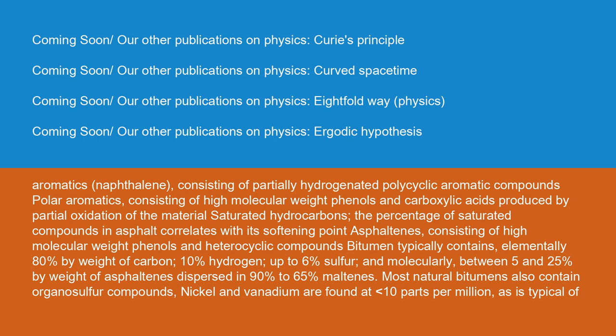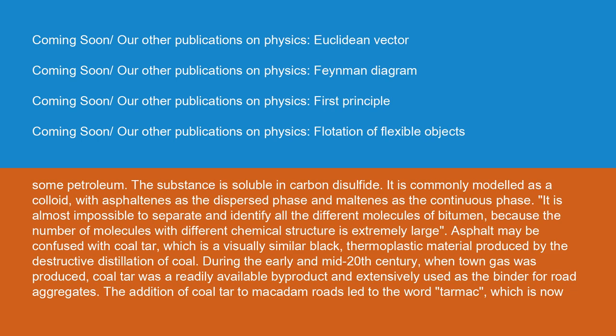Most natural bitumens also contain organosulfur compounds. Nickel and vanadium are found at less than 10 parts per million, as is typical of some petroleum. The substance is soluble in carbon disulfide. It is commonly modeled as a colloid, with asphaltenes as the dispersed phase and maltenes as the continuous phase. It is almost impossible to separate and identify all the different molecules of bitumen, because the number of molecules with different chemical structure is extremely large. Asphalt may be confused with coal tar, which is a visually similar black thermoplastic material produced by the destructive distillation of coal.